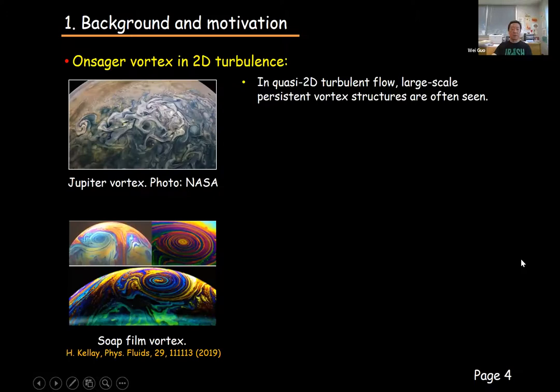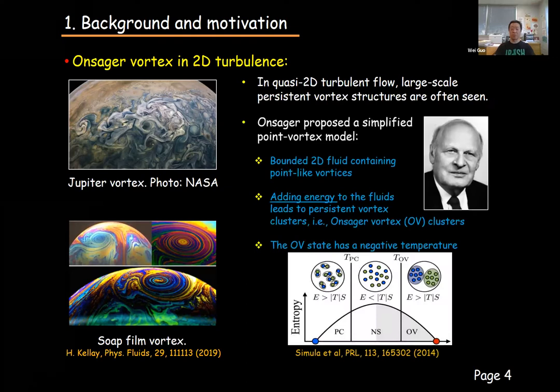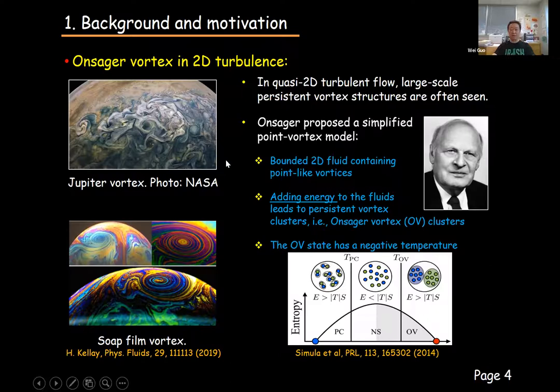Let me briefly introduce the concept of Onsager vortices. In two-dimensional fluids, such as Jupiter's atmosphere and soap films, large-scale and persistent vortex structures can often be observed. To explain the appearance of those large-scale vortices, Onsager first proposed a simplified point vortex model. This model applies to bounded two-dimensional fluid containing point-like vortices. It essentially states that when more and more energy is injected into the two-dimensional fluids, the like-signed vortices must aggregate together to induce strong flow and sustain the high kinetic energy. Those larger-scale vortices are the so-called Onsager vortex clusters.